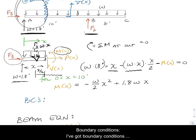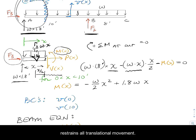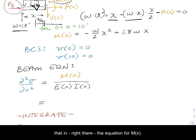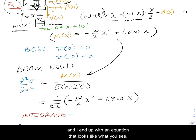Boundary conditions: I've got boundary conditions at the left end of the beam. I have a pin that restrains all translational movement, so I know that V at 0 equals 0, the movement in the vertical direction. I also know over at the roller at B, I have translational restraint in the perpendicular direction to the roller, so V at 10 equals 0. There is the second order beam equation. I'm going to plug in the equation for m of x right there, and I end up with an equation that looks like what you see.